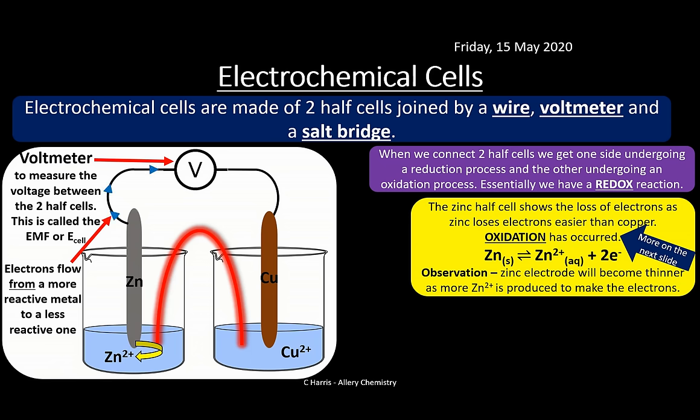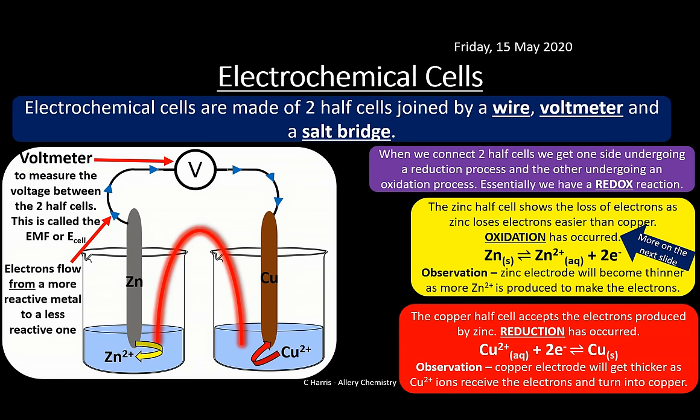The electrons produced by zinc travel to the copper electrode. The copper(II) ions in solution accept those electrons and reduction happens: Cu²⁺ + 2e⁻ → Cu. The observation is that the copper electrode gets thicker as copper metal coats it. There is always a reduction side and an oxidation side — the key is that we trap those electrons to do useful work.